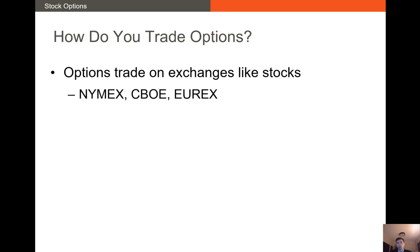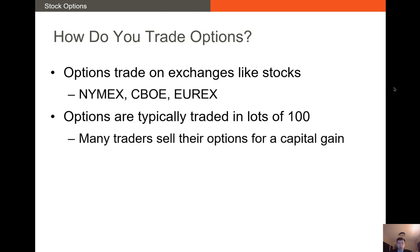So how do you actually trade options? Options trade in the US and Europe very much like stocks. We have several big exchanges: the NYMEX or New York Mercantile Exchange, the CBOE or Chicago Board Options Exchange, and Eurex, the European Exchange. Options are typically traded in round lots of 100. So if you want to buy call options, the default is you're buying options on 100 shares of stock at a time. Most brokerage platforms let you go down to about 10 options, or options on 10 shares of stock at a time.